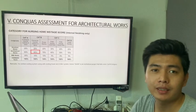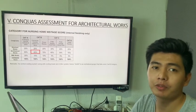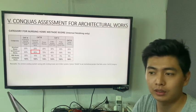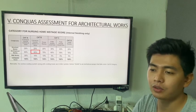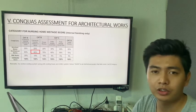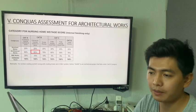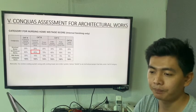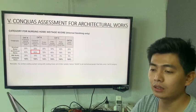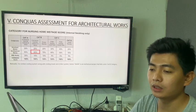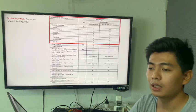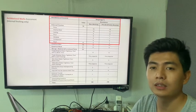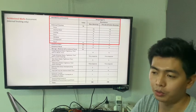Good day everybody. My name is Min Du Lai. I am row number 10 from Group B. Today I am presenting the CONQUAS assessment for architecture work. The quality delivered to our customer is very important, so we need to do the assessment. The architecture work category accounts for 65%. The interior finishes include floor, interior wall, ceiling, door, window, and components.